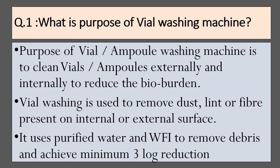The purpose of a vial or ampoule washing machine is to clean vials or ampoules externally and internally to reduce the bioburden. Vial washing is used to remove dust, lint, and fiber present on the internal or external surface. It uses purified water and WFI to remove debris and achieve a minimum 3-log reduction.